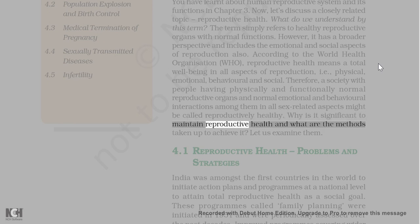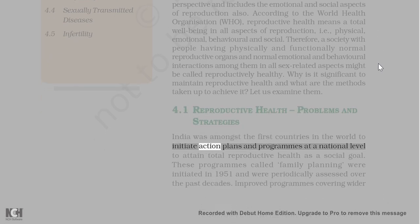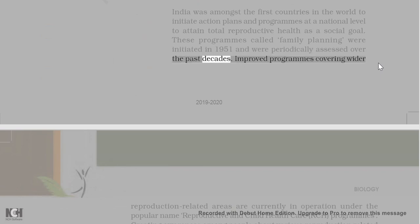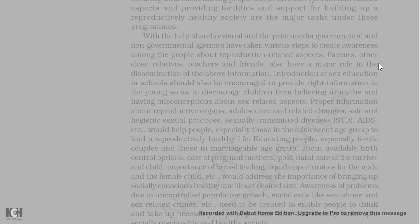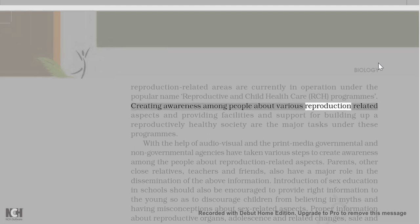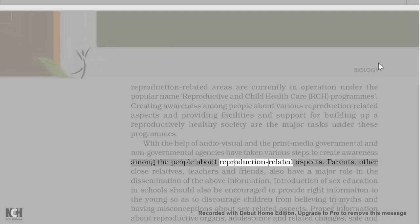India was amongst the first countries in the world to initiate action plans and programs at a national level to attain total reproductive health as a social goal. These programs, called family planning, were initiated in 1951. Improved programs are currently in operation under the name Reproductive and Child Healthcare (RCH). Creating awareness among people and providing facilities for a reproductively healthy society are major tasks. Governmental and non-governmental agencies have used audiovisual and print media to create this awareness.